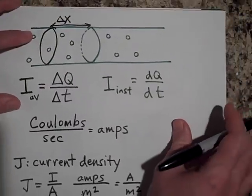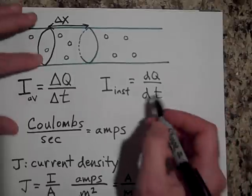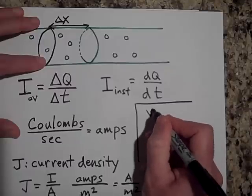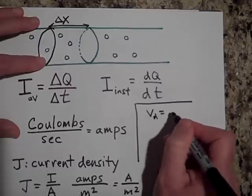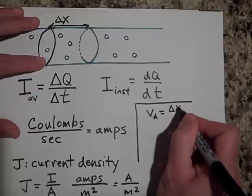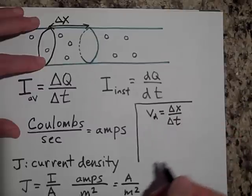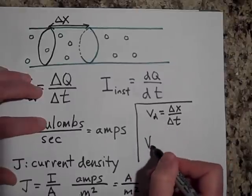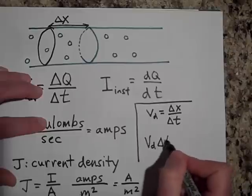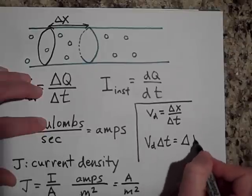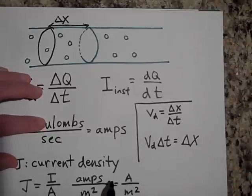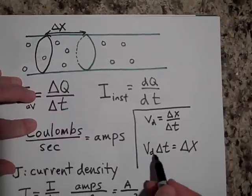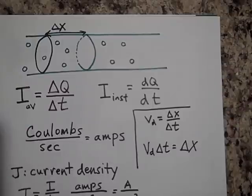Now, over here: if the drift velocity for an electron is how far it goes on average per time, then if I multiply the drift velocity times the time, that's how far it's going to go. So this delta x equals vd times delta t.